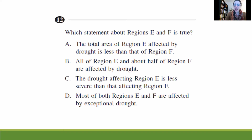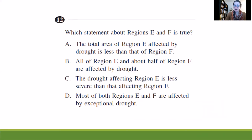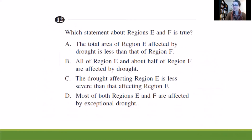Statement B says all of region E and about half of region F are affected by drought. Yes — all of region E is affected at 100 percent, and about half of region F is true: we see 50 percent on July 26th and the other days are in the 44 to 45 range. So B looks like a really good contender. Statement C says the drought affecting region E is less severe than that affecting region F. But we see a lot of exceptional drought in region E and 100 percent is affected — that's actually significantly worse than F, so C is not a good option.